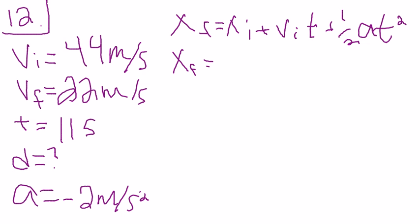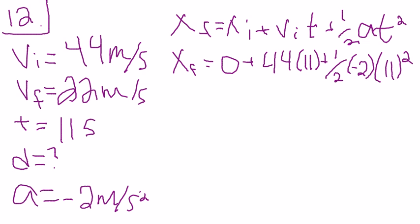Initial position was 0 plus 44 times 11 plus one half negative 2 times 11 squared. And after doing all the work you get 363 meters which is the displacement.